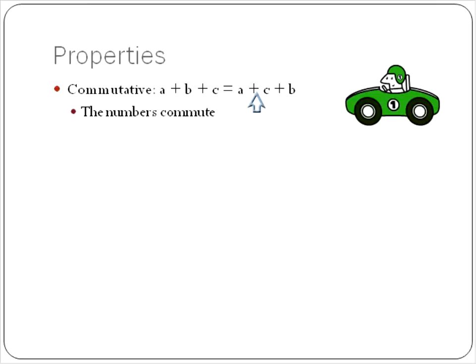The B decided it was going to go to the end of the C, and they kind of switched. When you're adding numbers together, it does not matter if you move them around. That's basically what this property is saying. They can commute to wherever they want. You have them in whatever order you want. That's the commutative property.